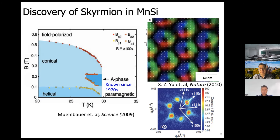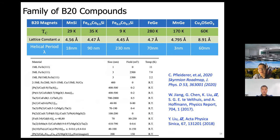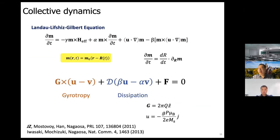This was further confirmed in real space by magnetic imaging using Lorentz transmission electron microscopy from the Tokura group. Each round object is a skyrmion and they are close-packed into a triangular lattice. After that, a series of skyrmion materials emerged — not only B20 compounds similar to MnSi, like iron germanide and copper selenide oxide, but also magnetic multilayers due to interfacial DM interaction.